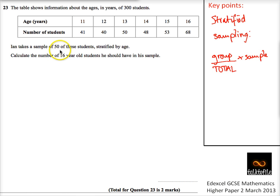We want a sample of 50 and we want to work out the number of 16 year olds. 16 year olds is here, so that's 68 over 300 multiplied by our sample of 50. Let's just check that. The group is 68, which is this one here.